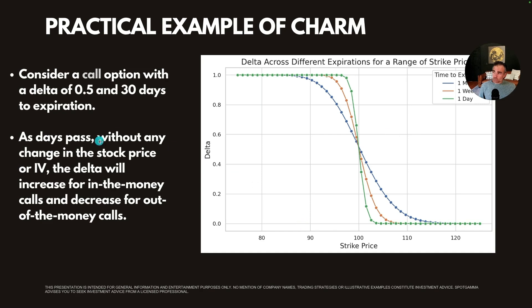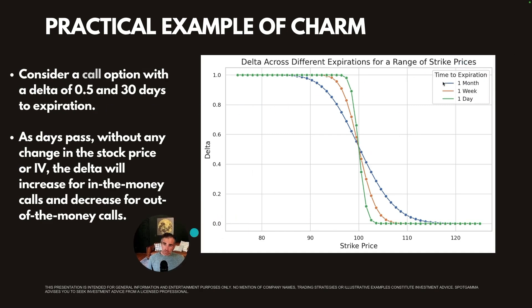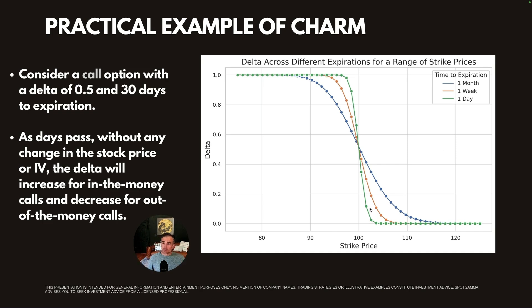Here we show a call option with a 50 Delta and 30 days to expiration — the blue line. At 100, this is roughly a 50 Delta option, and at lower or higher strikes there's still some Delta. But the more time decays and we shift to one day, it becomes almost a binary choice: either the option is in the money or out of the money, so Delta is either 1 (100) or 0. If you had a big position decaying over time, you can see how you would need to adjust hedge ratios as your options portfolio acts differently relative to the underlying stock move.